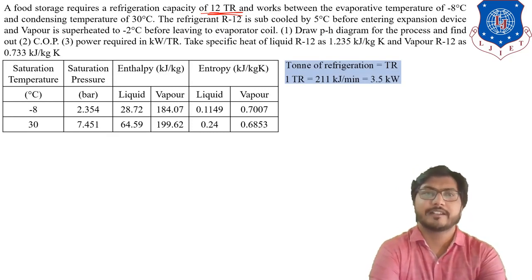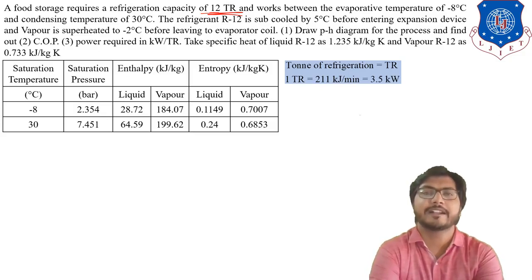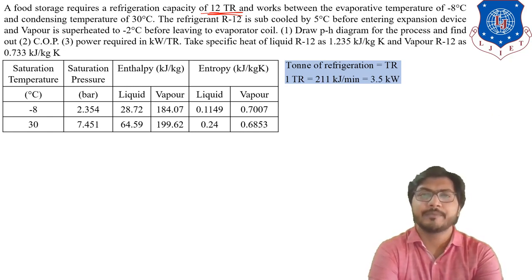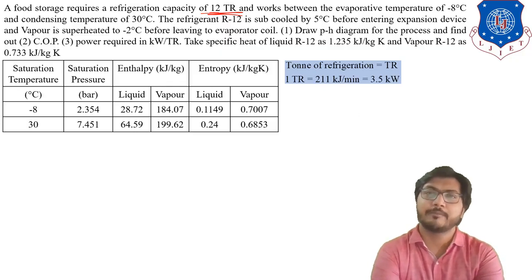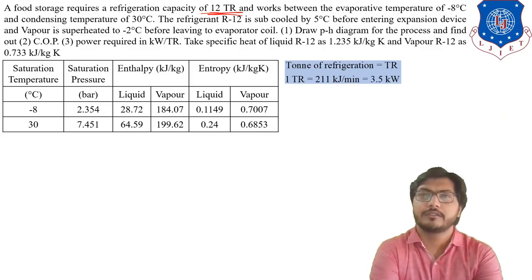A food storage requires a refrigeration capacity of 12 TR — 12 tons of refrigeration — which is the capacity of the plant. It works between an evaporating temperature of minus 8 degrees and a condenser temperature of 30 degrees centigrade. The refrigerant R12 is sub-cooled by 5 degrees centigrade before entering the expansion valve, meaning the temperature of the refrigerant decreases after the condenser. The vapor is superheated to minus 2 degrees before leaving the evaporator coil, that is, before going to the compressor.